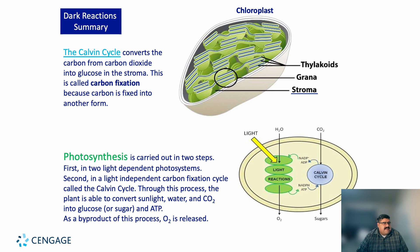A summary of the dark reaction: the Calvin cycle converts carbon from carbon dioxide into glucose in the stroma — this is known as carbon fixation, where carbon is fixed into another form. Photosynthesis is carried out in two steps: first, the two light-dependent photosystems; second, the light-independent carbon fixation cycle called the Calvin cycle. Through this process the plant converts sunlight, water, and carbon dioxide into glucose, with ATP and oxygen also released as byproducts.